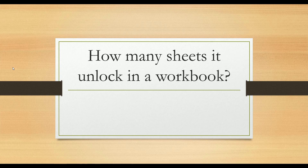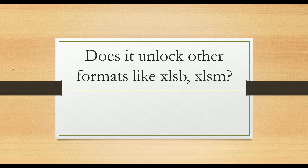How many sheets does it unlock in a workbook? If your workbook contains 80 sheets and all 80 are protected, it will unlock all of them. It does a check one by one — if a sheet is protected it will unprotect it, and if it is not protected it just ignores that sheet. By the end of execution, all your sheets in the workbook will be unlocked.